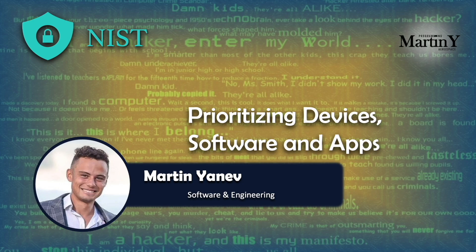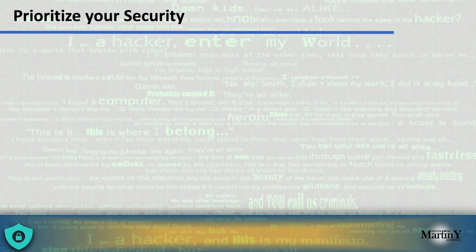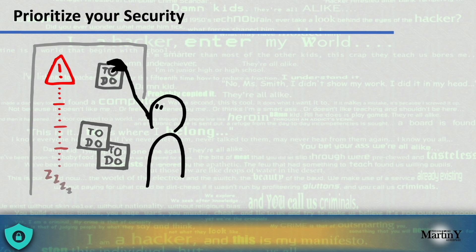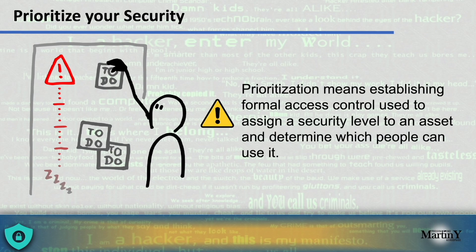Prioritizing Devices, Software and Apps. In today's video, we're going to talk about the risk planning component, which is responsible for developing criteria and assessing priority ratings for each local control system at risk. The different resources should be prioritized based on their classification, criticality, or business value. By prioritizing, we mean establishing local access control used to design security levels, which are tied to a set and determine which people can use that asset.